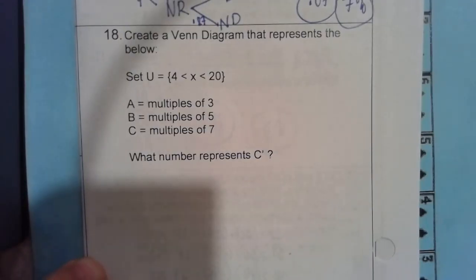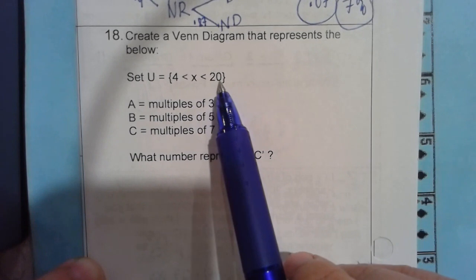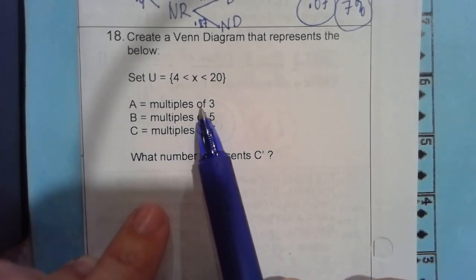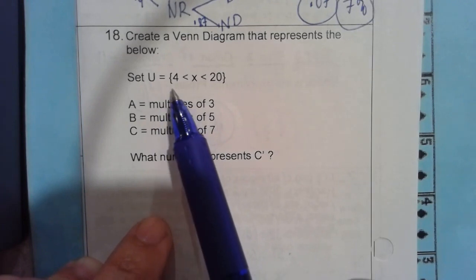18, create a Venn diagram that represents the set below. So set U for up to 20. Set A says multiples of 3. What are the multiples of 3 from 4 to 20?